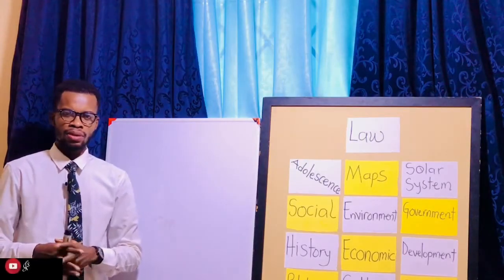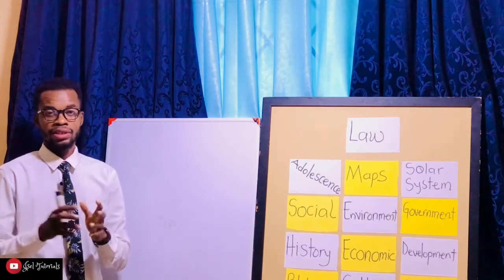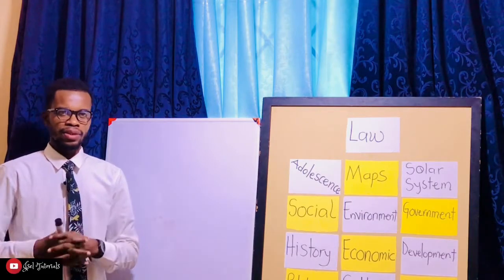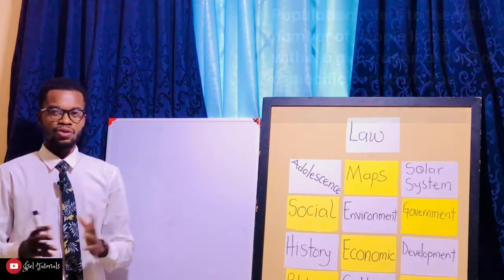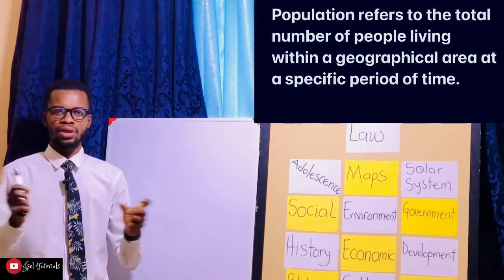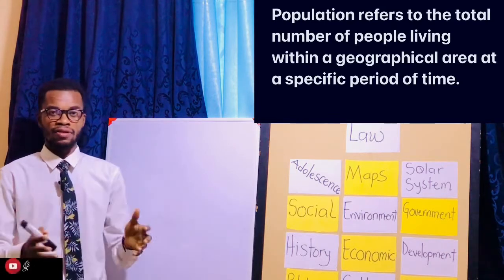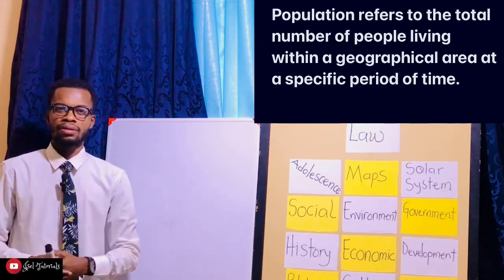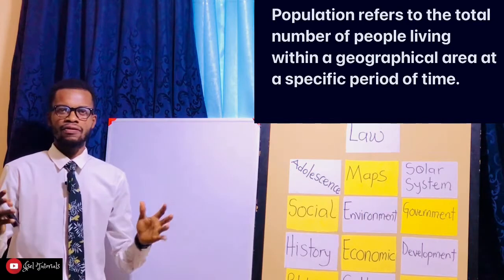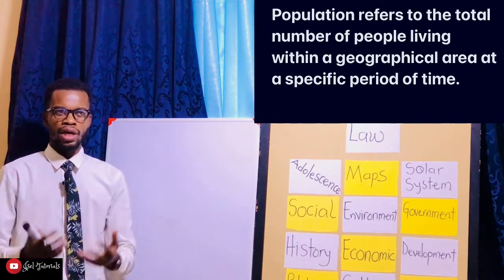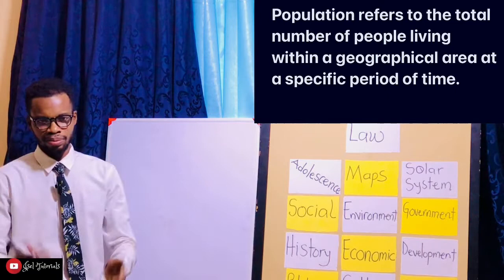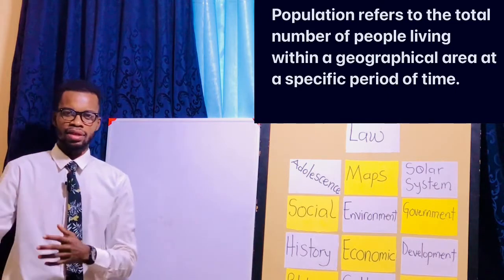Our first term is population. When we talk about population, it refers to the total number of people living within a geographical area at a specific period of time. That is a simple definition for population.